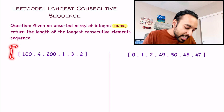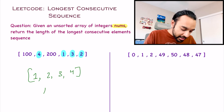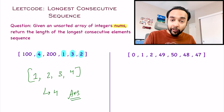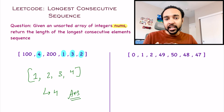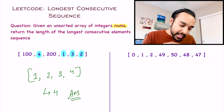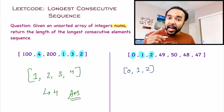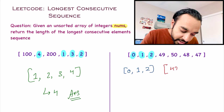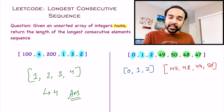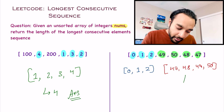To understand it better, let us take up our sample test cases. In test case one, the longest sequence available is 1, 2, 3, 4, and its length is 4 — so 4 is your answer. In test case two, there are two sequences: 0, 1, 2 with length 3, and 47, 48, 49, 50 with length 4. So once again, 4 will be your answer.